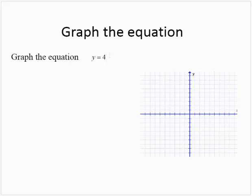Graph the equation y equals 4. When we're asked to graph and we're only given one variable, that's a special line — it's either a horizontal or vertical line. When you see an equation like y equals 4, we want to show all the points that have a y coordinate of 4.